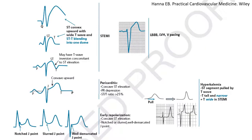Here is an illustration summarizing the shapes. The STEMI dome STT, sometimes with T inversion — distinguish it from pericarditis, which tends to be concave, and from early repolarization, which is also concave with a sharp, well-demarcated J-point or notched J-point or slurred J-point.